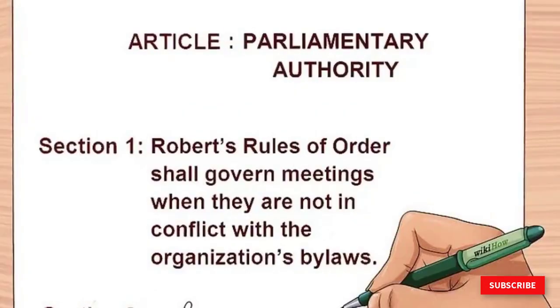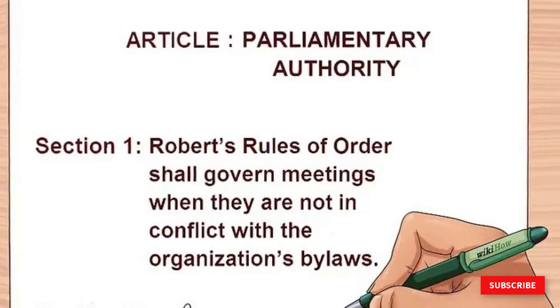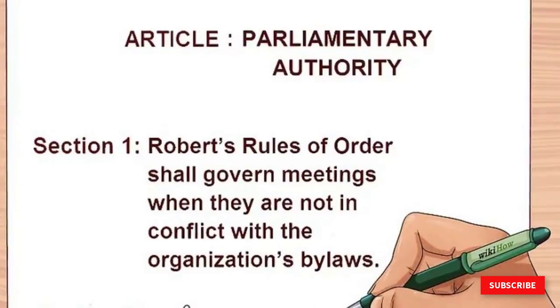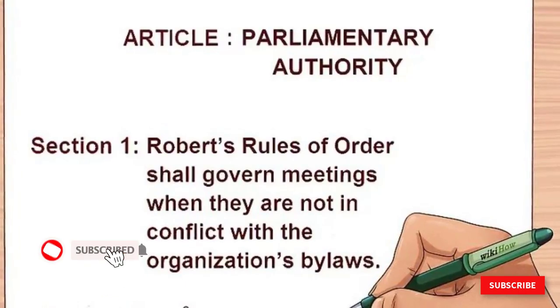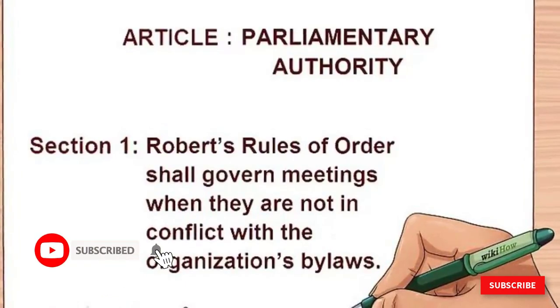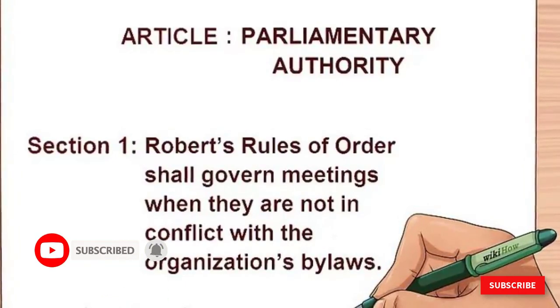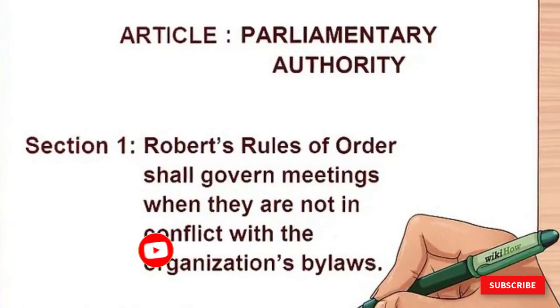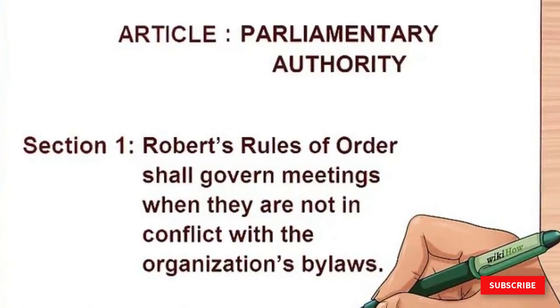Parliamentary authority is the set of guidelines that govern your procedures for how your organization is run. Many organizations abide by Robert's Rules of Order, a guide for how to run meetings in an assembly of people, in order to ensure that voices are heard and taken into account.